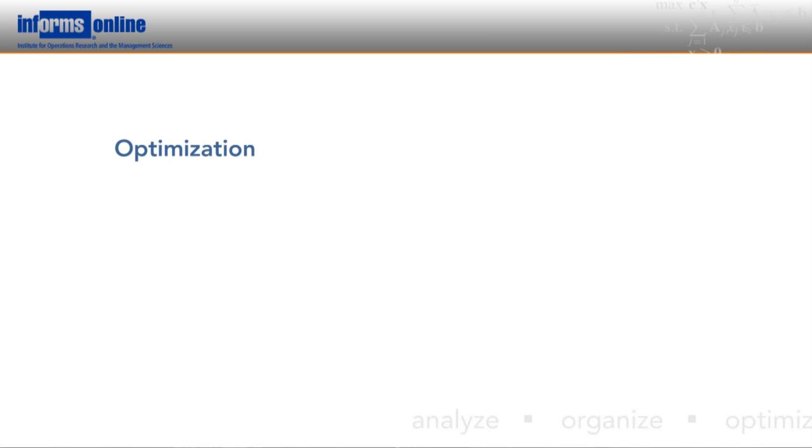Well, since I'm trained as a mathematician, I have to start by explaining what optimization means to a mathematician. Optimization to a mathematician means finding the absolute best answer to the model as presented.